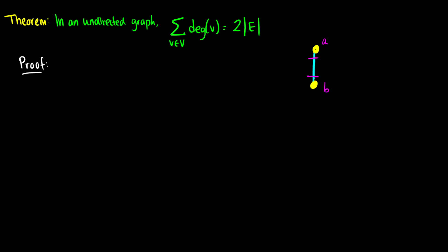Now if we have a loop, let's call this c, then we get one added to the degree when it leaves and one added to the degree when it comes back. So this loop will also add two. Because the only thing we can do with an edge is either put it between two vertices or loop it, each time we add an edge we just add two degrees. So two times the number of edges is equal to the total degrees of the graph.